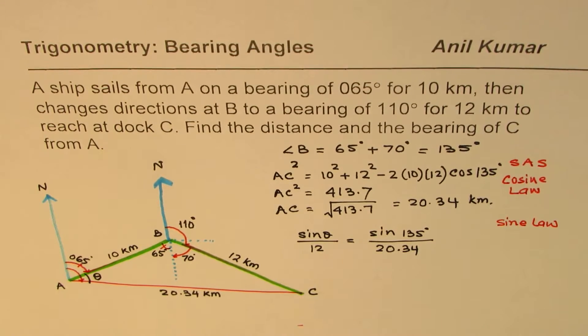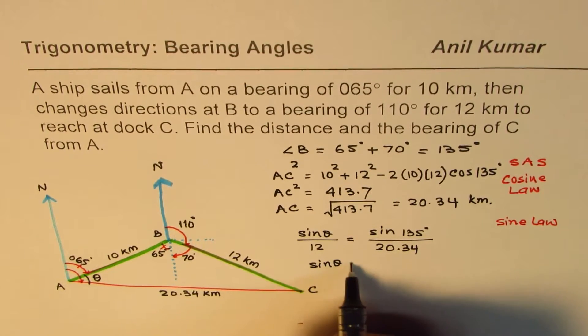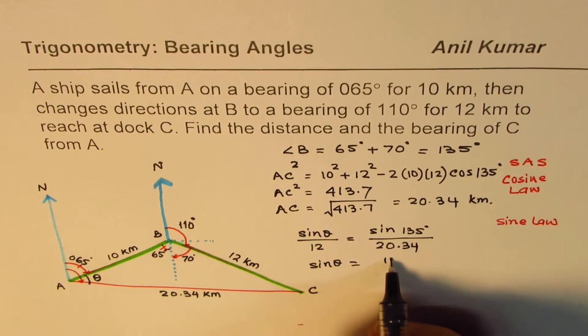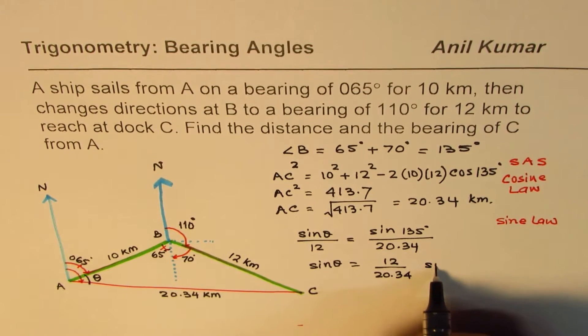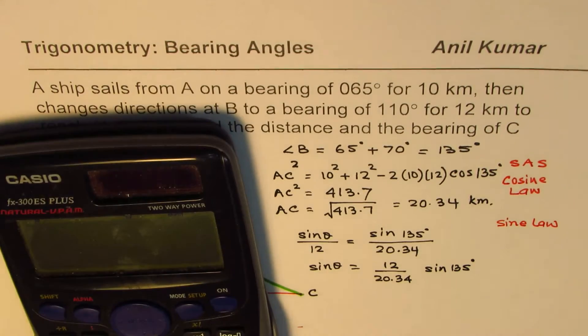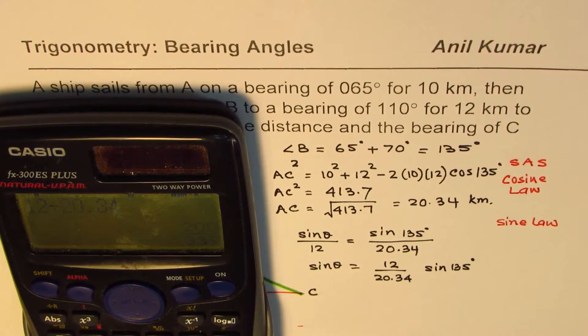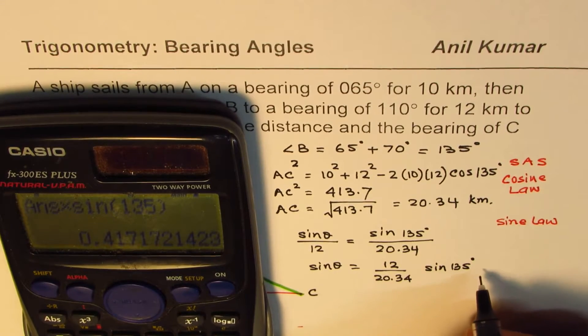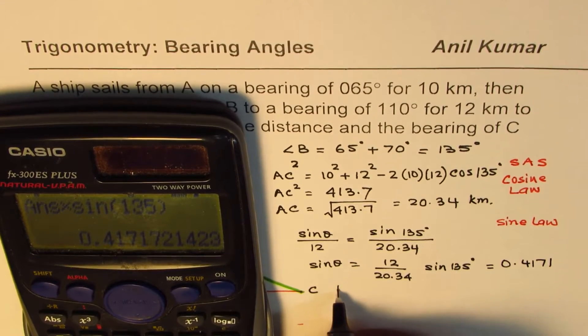So that gives us the value of sine theta. So sine theta from here can be calculated as we can cross multiply. So we get 12 divided by 20.34 times sine of 135 degrees. So let's use the calculator, find this answer. So 12 divided by 20.34, we'll multiply this by sine of 135 degrees. And that is equal to 0.4171.